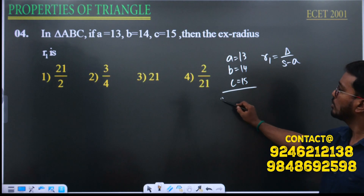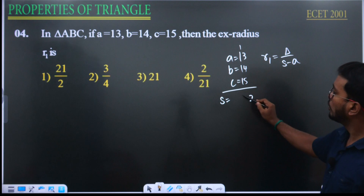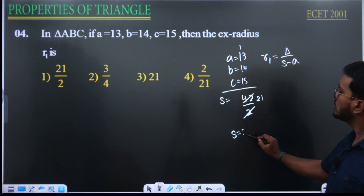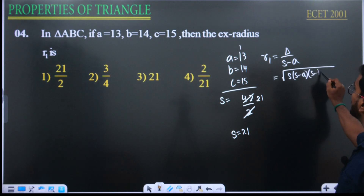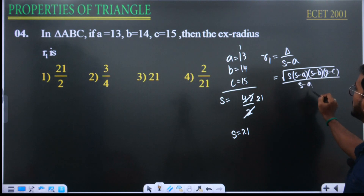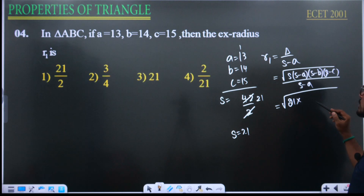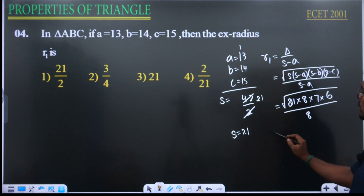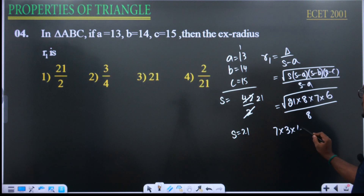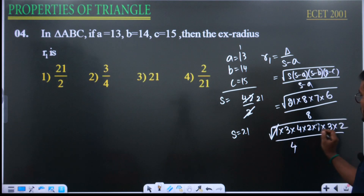First find s: (13 plus 14 plus 15) divided by 2 equals 42 divided by 2 equals 21. So s equals 21. Delta equals root of s(s minus a)(s minus b)(s minus c) equals root of 21 times (21 minus 13) times (21 minus 14) times (21 minus 15) equals root of 21 times 8 times 7 times 6.